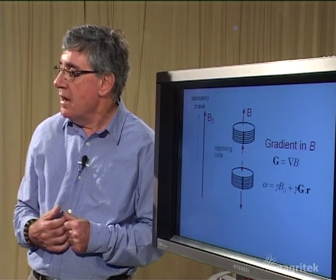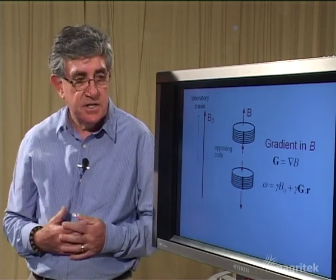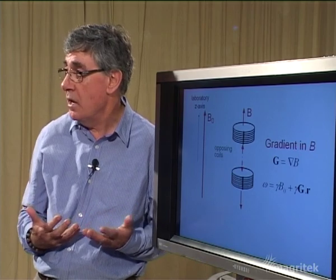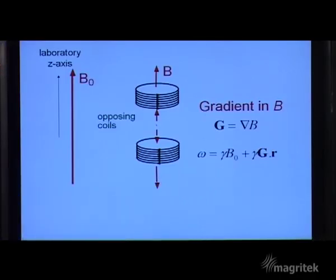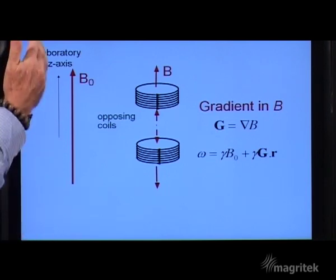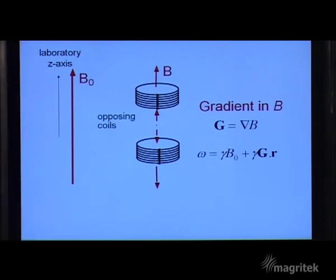So how do we write that Larmor precession equation in this case? It's really exactly the same as before, as we saw it in one dimension. We start off with the precession due to the main static field, and then in addition to that we have another term due to the magnetic field gradient.